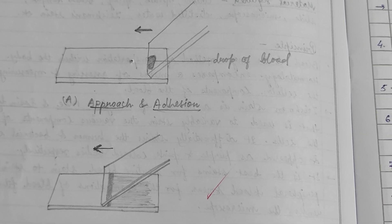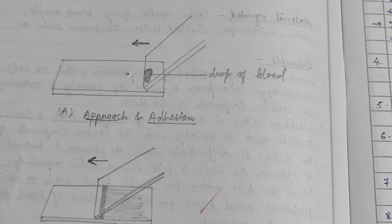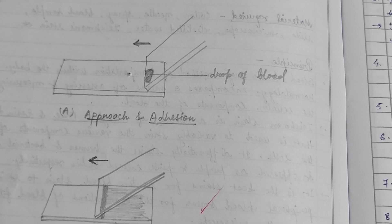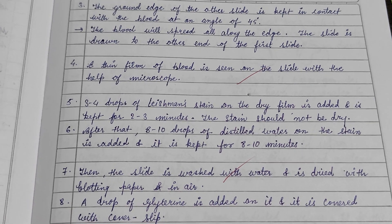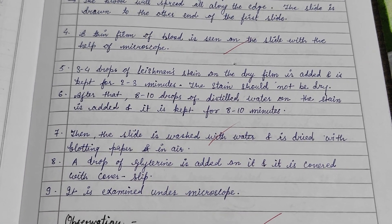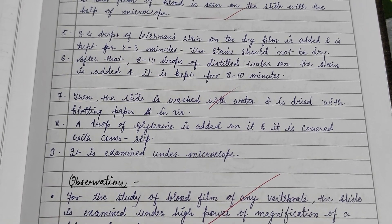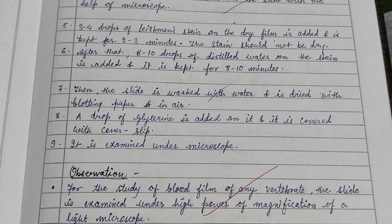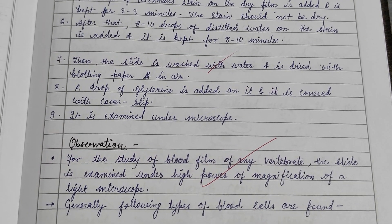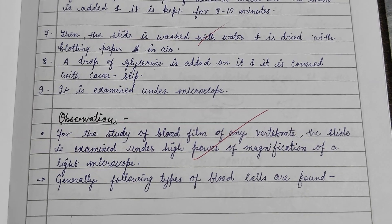A bold drop of blood is taken on the slide, and with the help of another slide the smear of blood is prepared. The procedures are as follows: three to four drops of Leishman stain are added on the dry film and kept for two to three minutes. After that, eight to ten drops of distilled water are added so that it cannot be dehydrated.